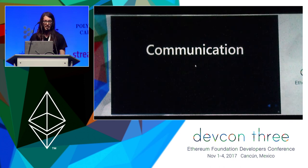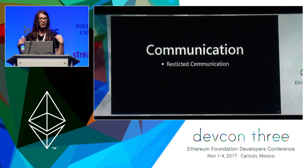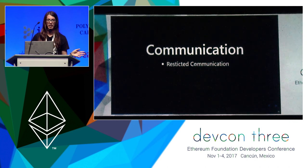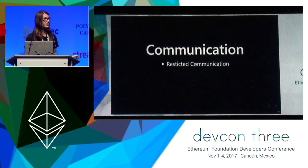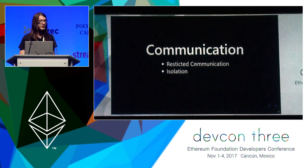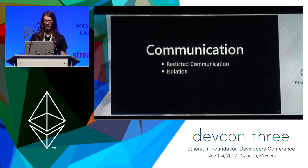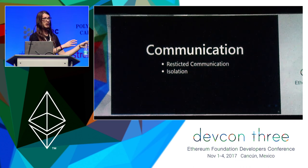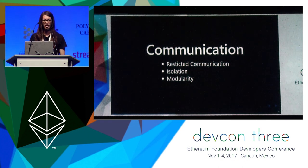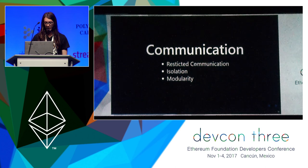Communication here is a bit different from how communication and contracts work now in Ethereum. Currently any contract can send a message to any other contract. Here communication is more restricted — you have to have a line of communication. But this has benefits: it allows us to build isolation — groups of contracts that we know cannot be contacted by other groups — and therefore allows us to build modularity. Also, this makes it fairly easy to build concurrency.